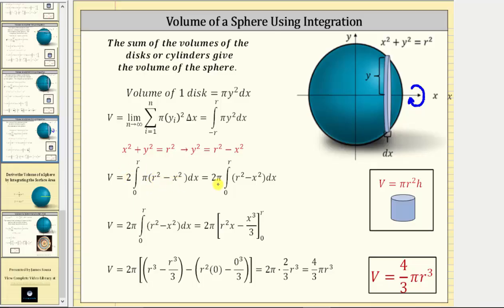For the next step, we can factor out pi, which gives us the volume is equal to two pi times integral from zero to r of r squared minus x squared differential x.